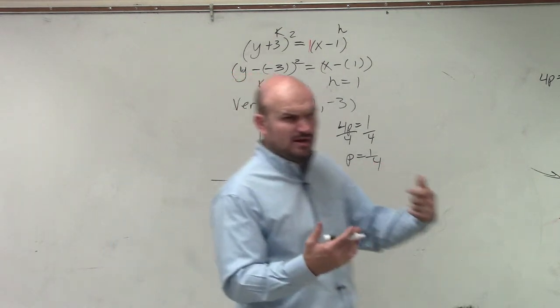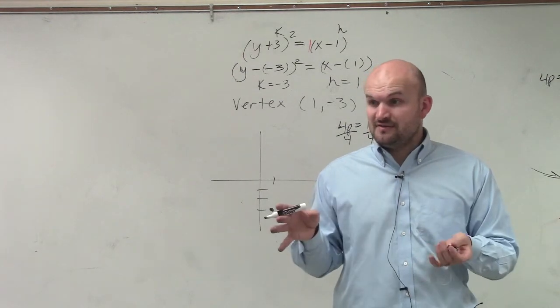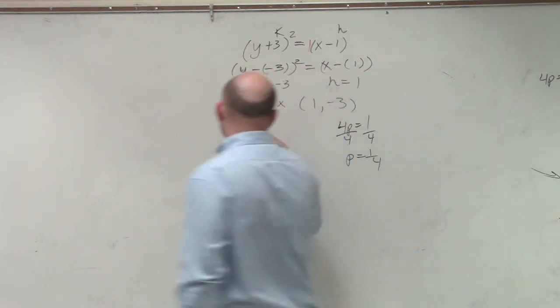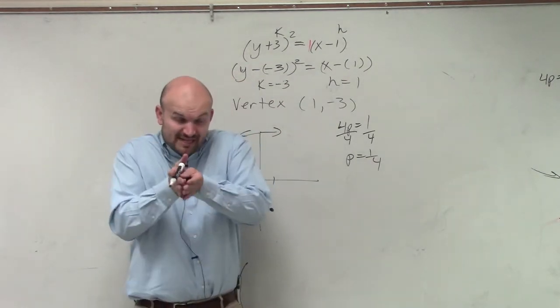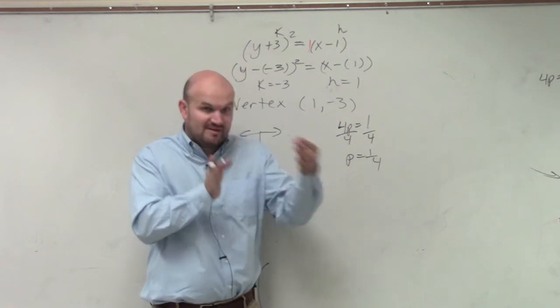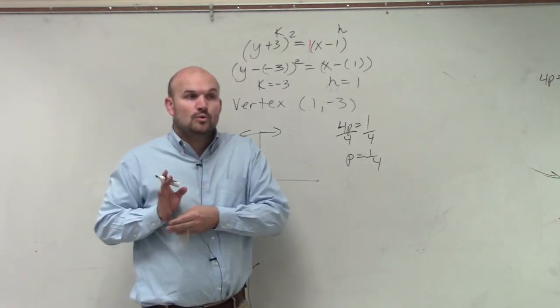Now, what variable is being squared? y. So should my parabola be opening up or down or left or right? Left or right. p is positive. So therefore, p is the distance from my vertex to my focus. Since it's positive, I should be going to my right.